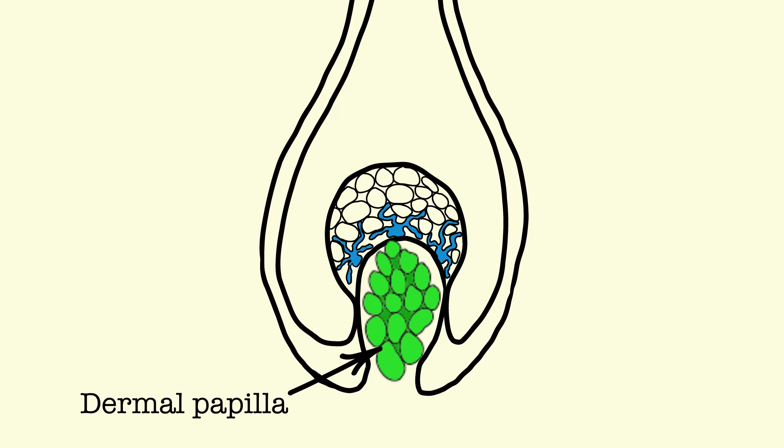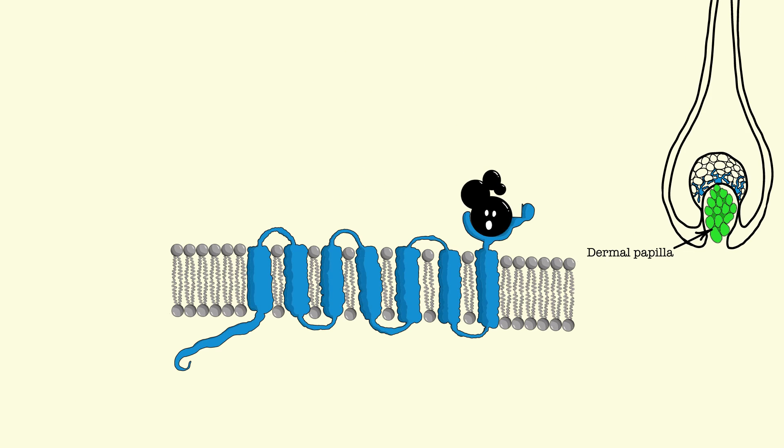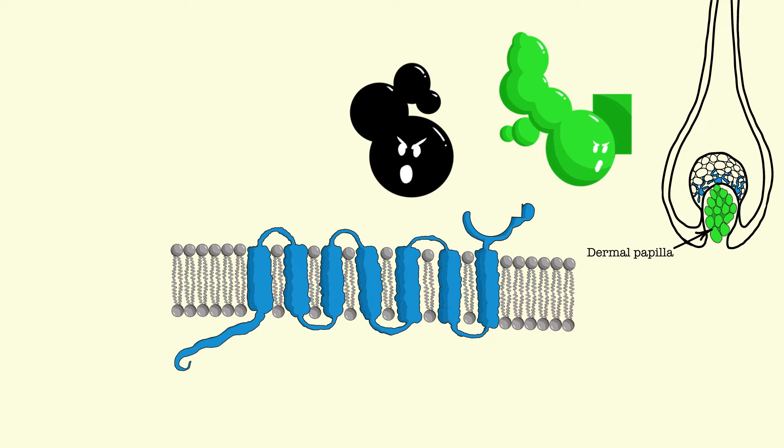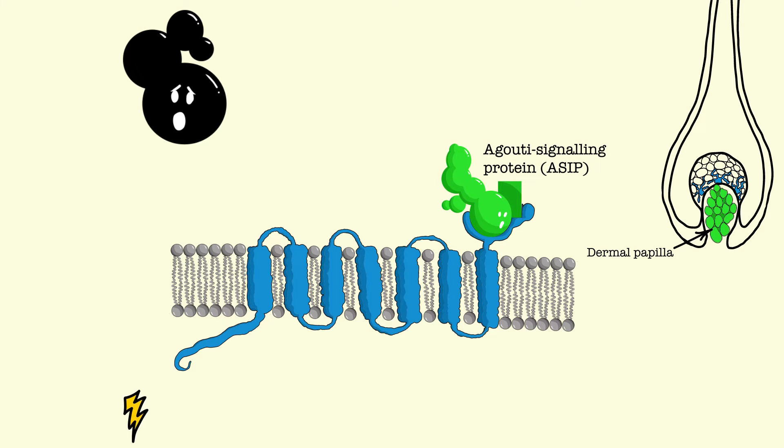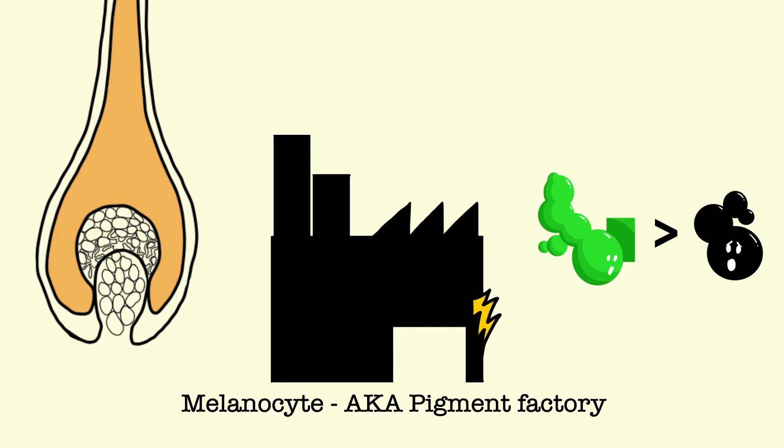Conversely, the dermal papilla cells located nearby to the melanocytes are responsible for making agouti signaling protein, or ASIP. If ASIP is present, it will always be dominant over MSH and induce pheomelanin production.